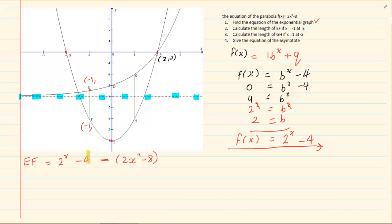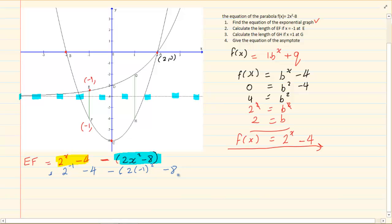So we have our exponential minus our parabola. Now once we have that let's substitute our x. So we have 2 to the power of minus 1 minus 4 minus open brackets 2 into minus 1 squared minus 8 close brackets. So the length is 2 and a half.